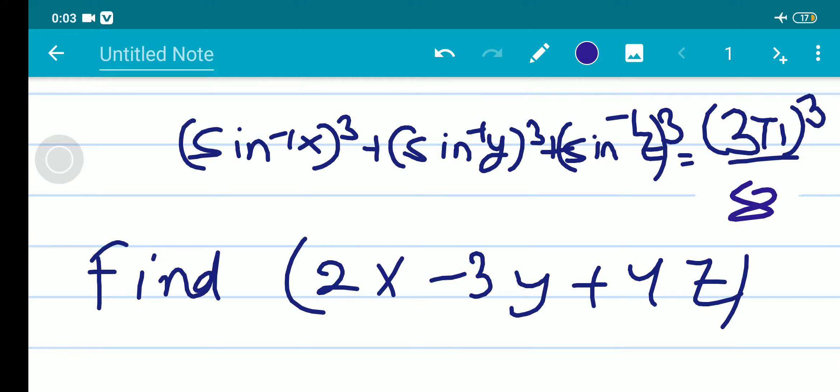We need to find the final value of 2x minus 3y plus 4z. So if you can solve it, please solve it. I'm going to solve it.